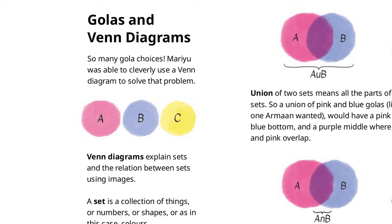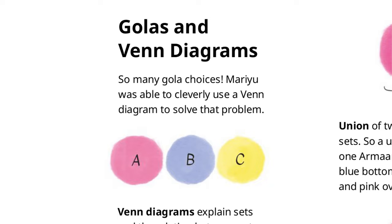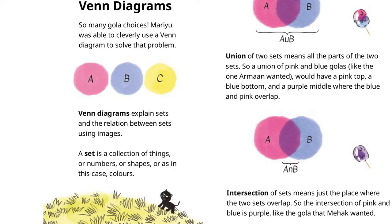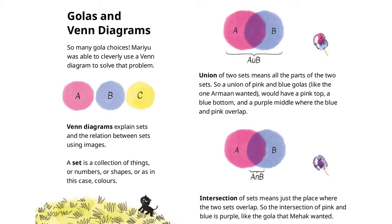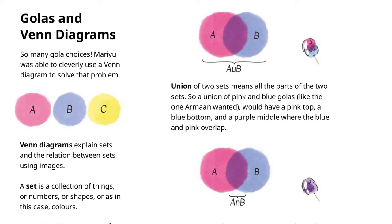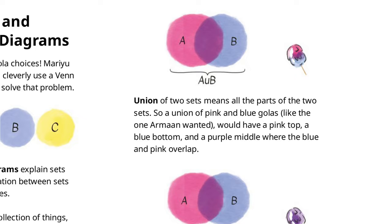What's a Venn diagram? A Venn diagram explains sets and the relation between sets using images. A set is a collection of things — numbers, shapes, or, as in this case, colors. When there is a union, the union of two sets means all the parts of the two sets. So a union of pink and blue golas, like the one Arman wanted, would have a pink top, a blue bottom, and a purple middle where the blue and pink overlap.